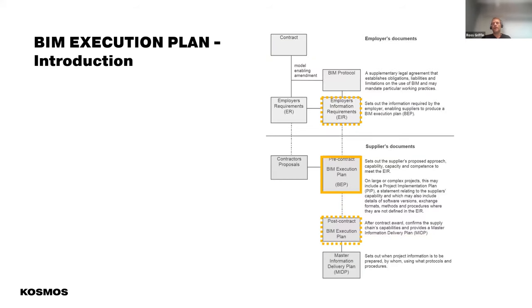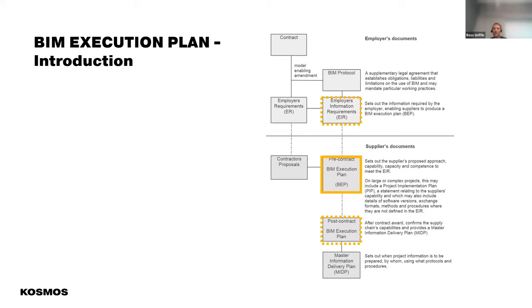Every stakeholder group within the project lifecycle will have different deliverables, requirements, responsibilities, and needs. It's important to understand who manages this information and has responsibility across the project lifecycle. The BIM execution plan is split between the employer's or client's documents versus the supplier's documents — like the contractor, architect, engineer, etc. The employer defines what their needs are as an overall strategy, then defines them at project level with the BIM execution plan, so that suppliers — consultants, contractor, supply chain — can deliver within those requirements.